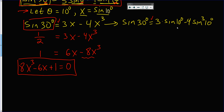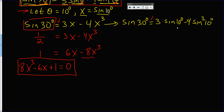Remember, sine of 10 degrees is the solution to this. If you actually take your calculator and compute 8 times the sine cubed of 10 degrees minus 6 times sine of 10 degrees, you will get negative one, and when you add the one you will get zero. So this equation has sine of 10 degrees as one of its solutions.